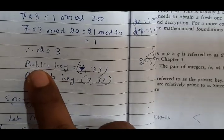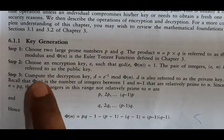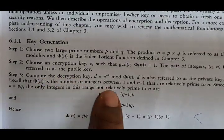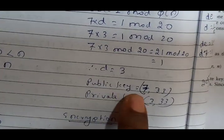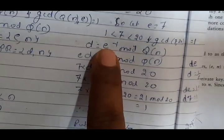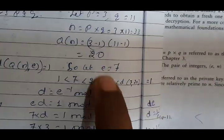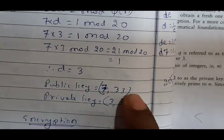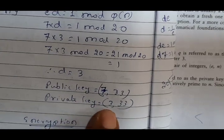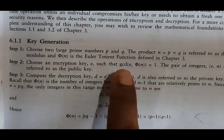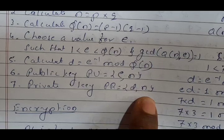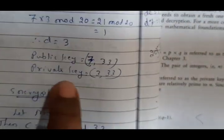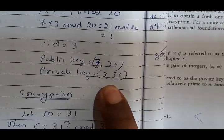So what is the public key? The public key is the pair E comma N — that is, E equals 7 and N equals 33, so the public key is (7, 33). And what is the private key? The private key is D comma N — that is, D equals 3 and N equals 33, so the private key is (3, 33). We have now calculated the public key and private key.